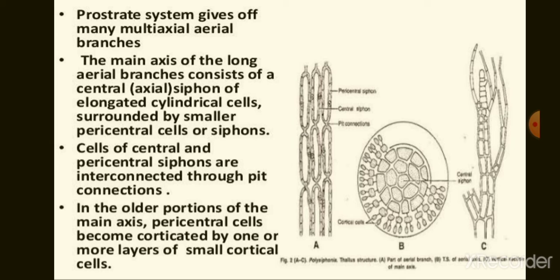The erect system consists of a main axis having long and short branches. The short branches bear male and female reproductive structures. The plant body is made up of siphons. Each long branch and main axis consists of a central siphon made up of many elongated cells arranged one upon the other. The central siphon is surrounded by many — up to 4 to 20 — pericentral siphons. Cells of the central and pericentral siphons are connected with each other by cytoplasmic connections or pit connections. Short branches consist of cells arranged in a single row and are unisiphonous; these are called trichoblasts.